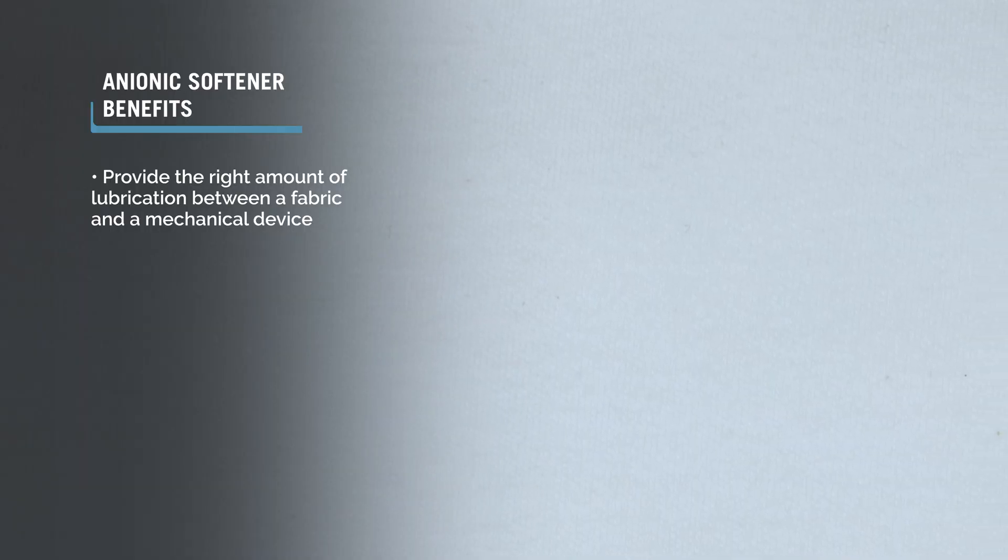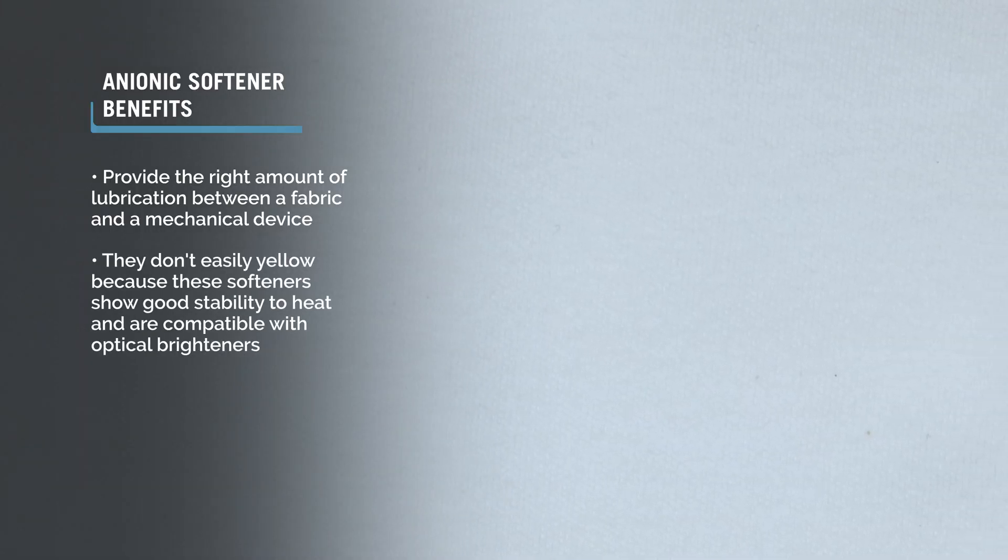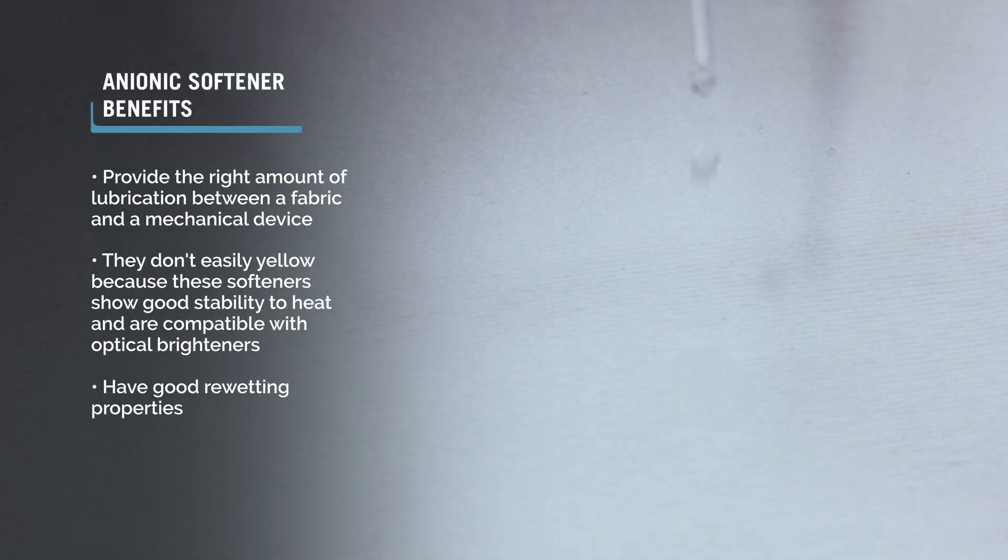Another advantage for fabric that is finished with anionics is they don't easily yellow because these softeners show good stability to heat and are compatible with optical brighteners. They also have good re-wetting properties and are preferred for fabrics such as towels that must absorb water.